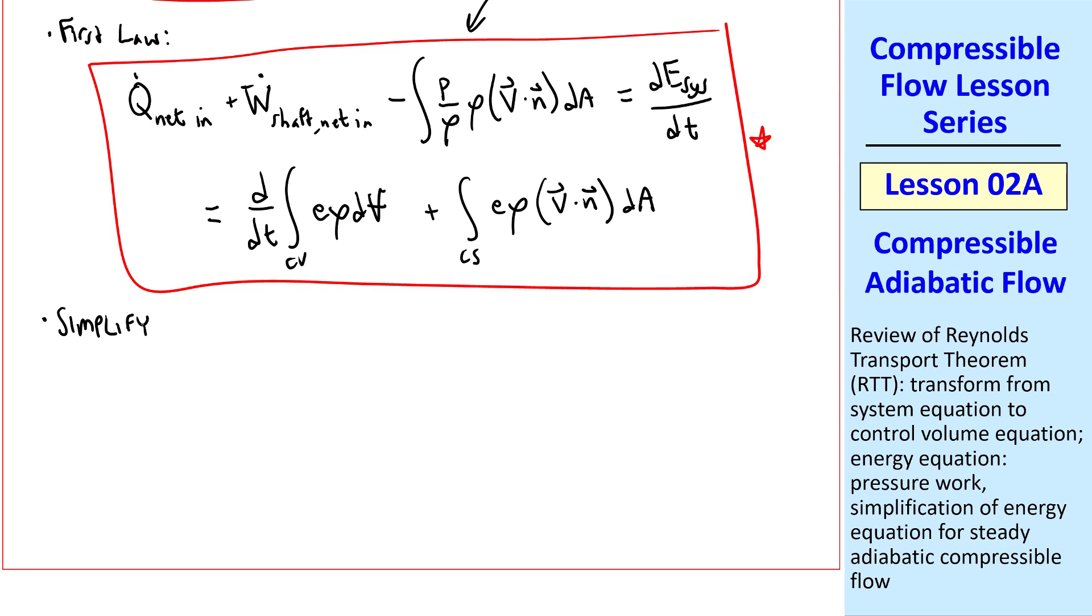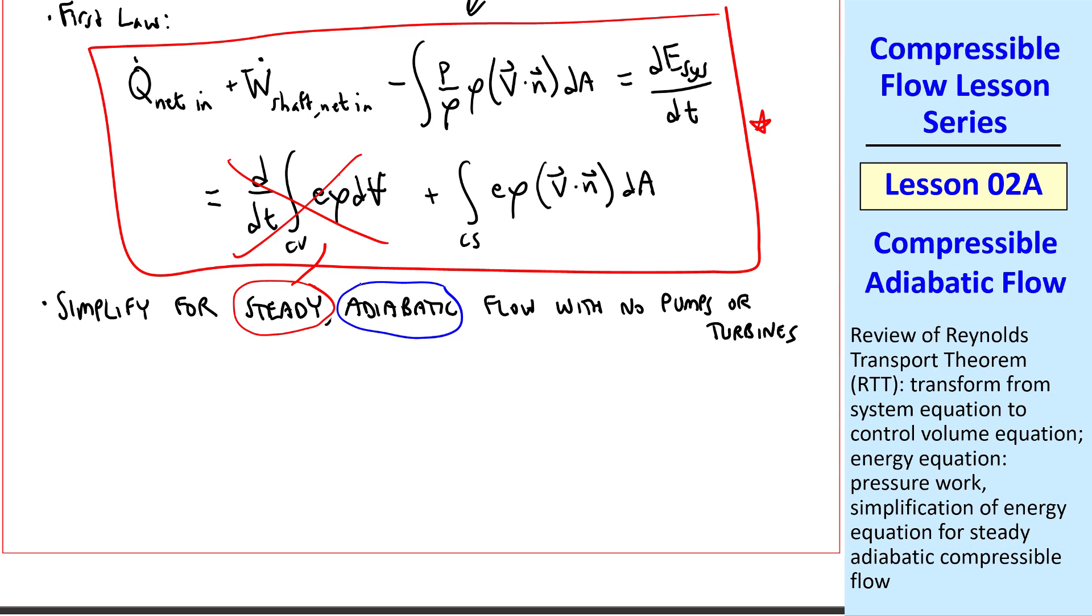For the problems we do, we'll simplify this. For steady, adiabatic flow, with no pumps or turbines, if the flow's steady, this term goes away. If the flow's adiabatic, this term goes away. And when there's no shaft work, or pumps and turbines, this term goes away. And notice that there are two equal signs in this equation, but this term is kind of the intermediate link between system and control volume. So we don't consider this term, but simply equate this term and this term. And since they're both of the same form, namely control surface integrals, we can combine them both onto one side.